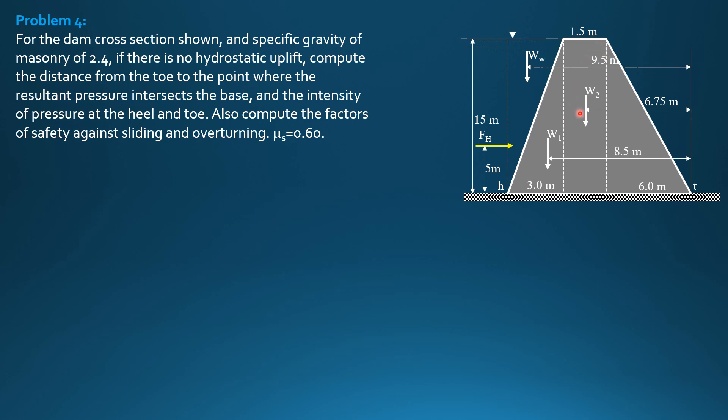Half of 1.5, 0.75 plus 6, so 6.75. And weight sub 3, 2 thirds of 6, so 4 meters from the toe.